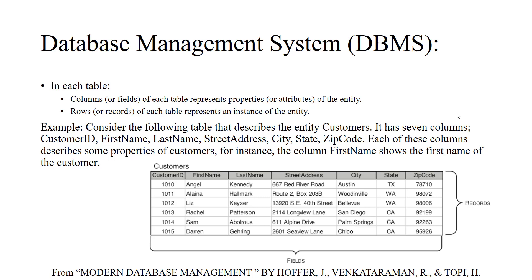For each customer we have the ID, first name, last name, address, and so on. Sometimes these columns are called fields or attributes of the entity. Tables represent entities or relations in the database, and the columns are called fields — they represent the properties of the entity. Attributes and properties mean the same thing. Each column represents a property or attribute of the entity.